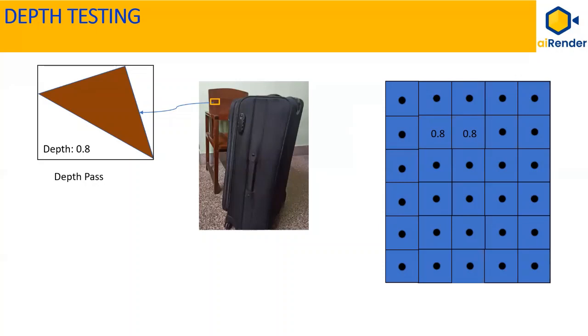So, this triangle passes the depth testing and corresponding locations in the depth buffer are marked as 0.8. These locations map to the imaginary rectangle covering the triangle. Depth test pass means this chair triangle will continue through further steps of rendering.